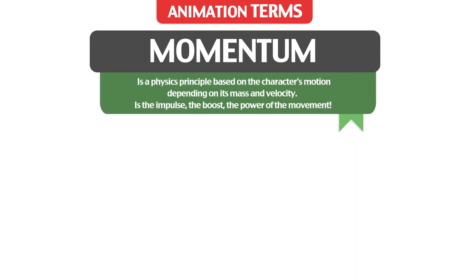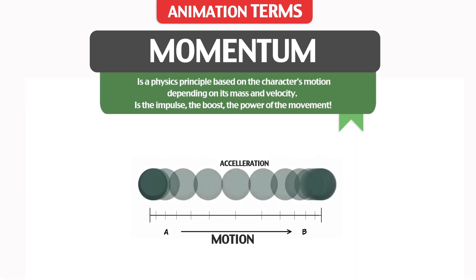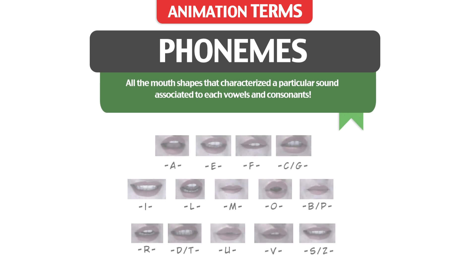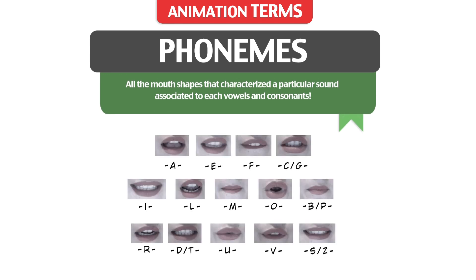Momentum: it's a physical principle based on the character's motion depending on its mass and velocity. It's the impulse, the buzz, the power of the movement. Phonemes: all the mouth shapes that characterize a particular sound, associated to each vowel and consonant.